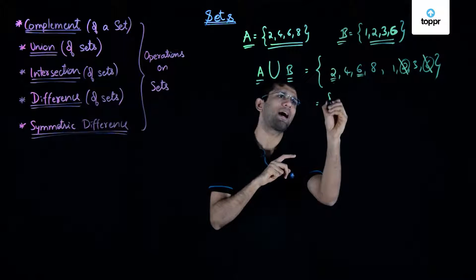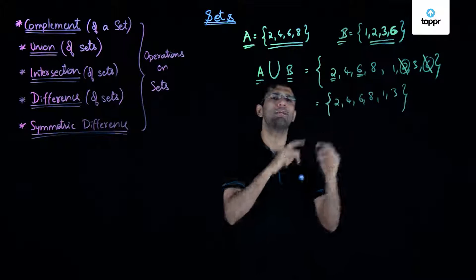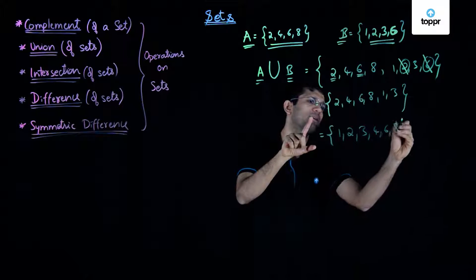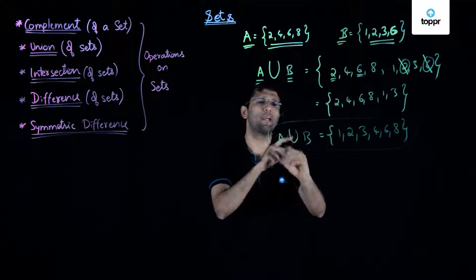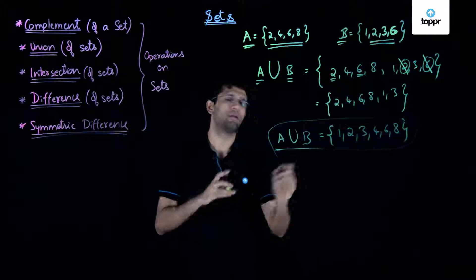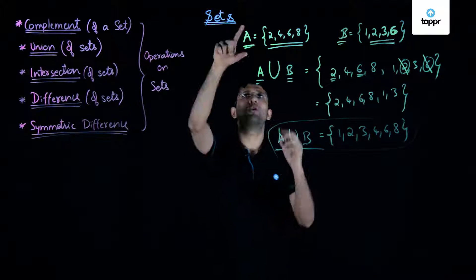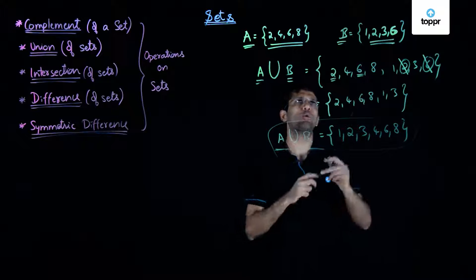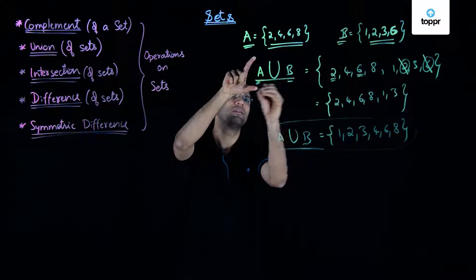The resulting set consists of 2, 4, 6, 8, 1, and 3. Written in orderly fashion, A union B consists of the six elements 1, 2, 3, 4, 6, and 8. The union of two sets A and B is defined as the set consisting of all elements that are only in A, all elements that are only in B, and all elements that are in both sets A and B.